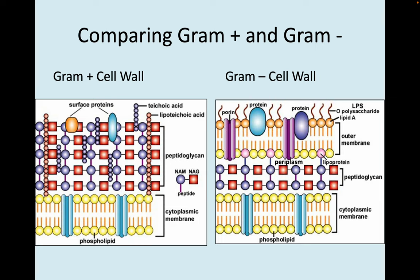Comparing gram-positive and gram-negative cells: the gram-positive cell wall has a very thick chainmail layer of peptidoglycan with the cytoplasmic membrane underneath. The gram-negative cell has a very thin peptidoglycan cell wall, and on the outside of that is an outer membrane with phospholipids and lipopolysaccharides, where you also see the porin proteins.